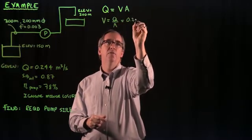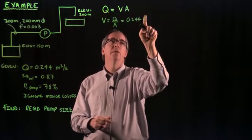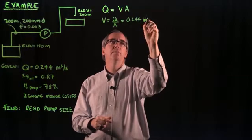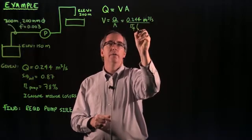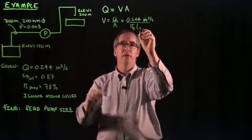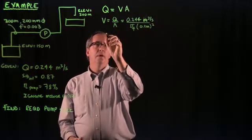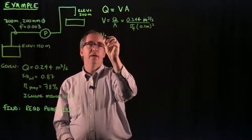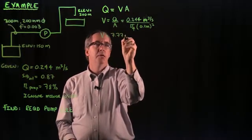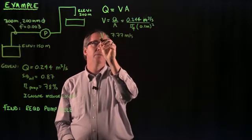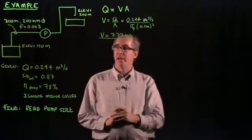Our flow is given as 0.244 cubic meters per second and then our area is pi over 4 and then we have a 200 millimeter diameter pipe which is 0.2 meters, squared. When we solve for that it gives us a velocity of 7.77 meters per second. Now let's get to the engineering side of this.